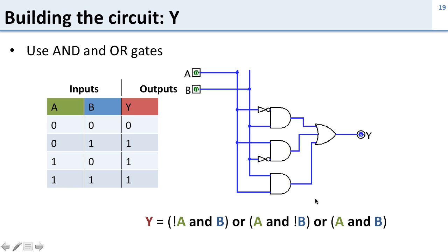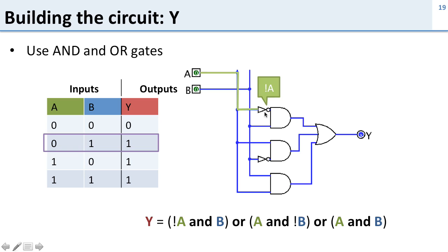Here's the circuit for that — it's a pretty complicated circuit. Let's take a look at what's happening. Here we have a is false and b is true and y is true. Here a goes into an inverter, giving NOT a. NOT a and b both go into an AND gate, so this AND gate computes NOT a AND b.